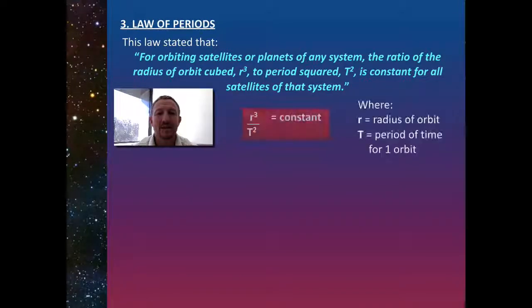We've got this formula that R³ divided by T² equals a constant. It's going to be the same for every single planet. We can take their radius and their time period, and they would come up with roughly the same values.